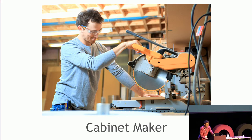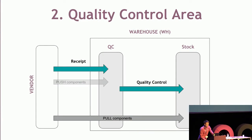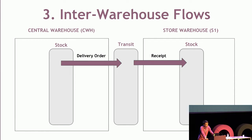Let's look at the use cases I've chosen. I'm working with a cabinet maker as an SME. The first process is pick-and-manufacture simultaneously, using a pre-production stock location where products are first sent and then the finished product is manufactured from pre-production to stock. The second use case is configuring a merged push-and-pull rule for a quality control area. Finally, I'll review inter-warehouse flows and how to track problems through the 2D visual representation.